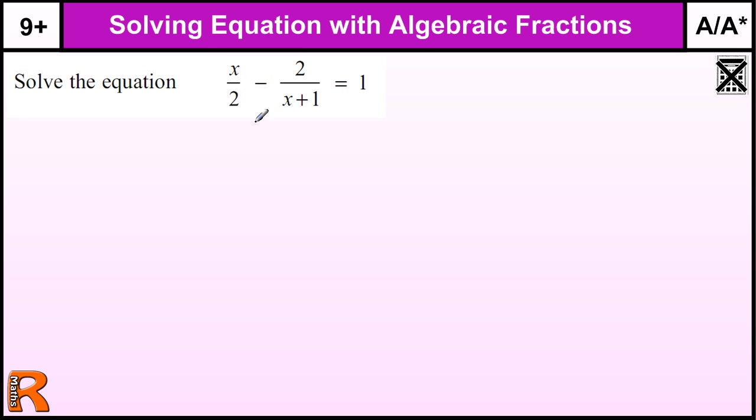The first way is to combine the two fractions first. To combine these fractions, I need to find a common denominator. The standard way is to multiply the two denominators together. So I've got 2 times (x+1) and (x+1). When I multiply the fraction x/2 by (x+1), I get that.